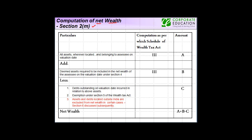The first one is all assets. The second one is deemed assets. And the third one is certain deductions. So let's start with the first one, which is assets.